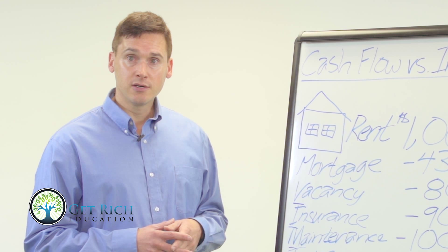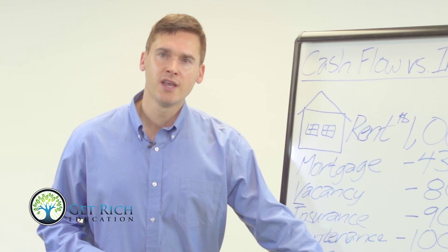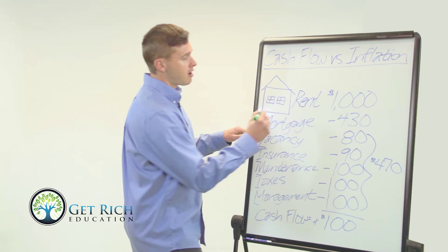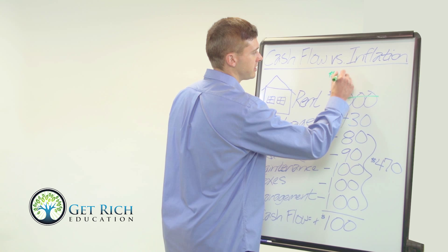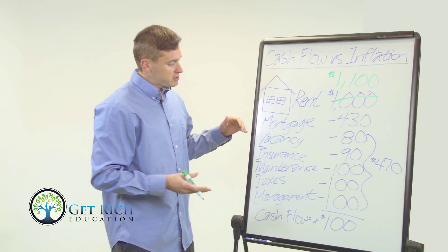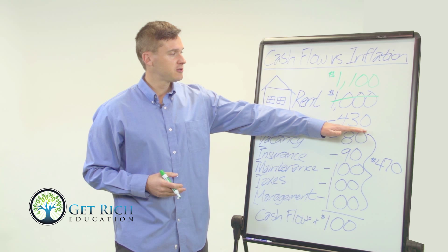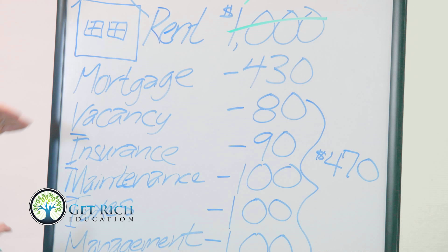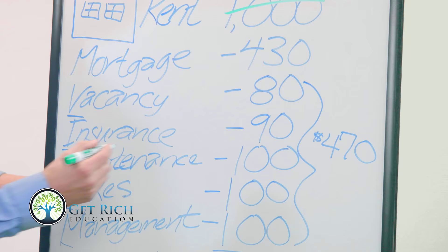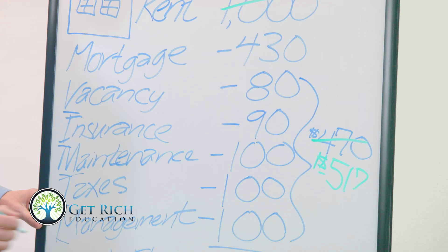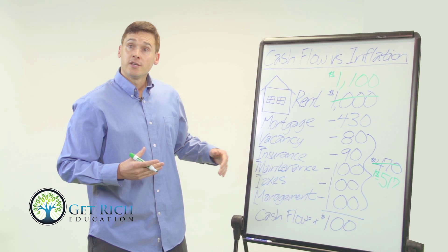Now let's look at what inflation does to this example over time. Let's fast forward three years, and over those three years let's say there's a total 10% rate of inflation — represented by the green. Our rent increases by 10%, so now we have $1,100 in rent income. However, over time most of our expenses also increase at that same 10% rate of inflation except for the mortgage, and that's the key. You have a fixed interest rate mortgage, so your principal and interest payment stays the same three years later. Your other expenses, however, increase at that 10% inflation rate to $517.